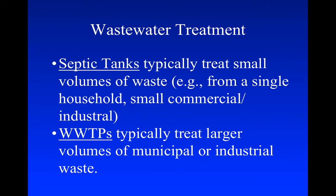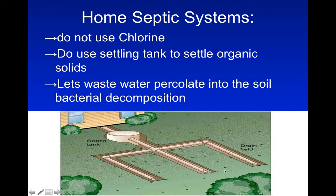Most people have septic tanks — about 30 percent of the people in the United States have them. They're usually seen in rural areas, so if you live in a rural area you probably have septic tanks rather than waste going straight to a wastewater treatment plant. The septic tank system has a tank and pipes that lead out to drain any of the liquid, while the solid waste is collected in the tank.